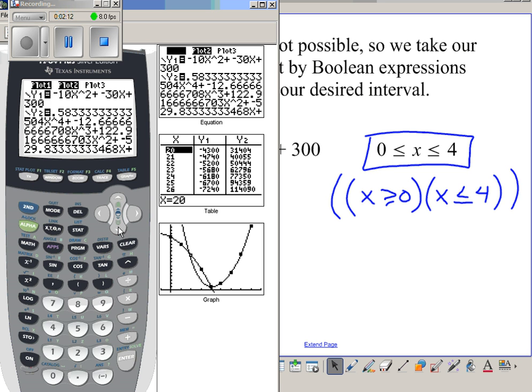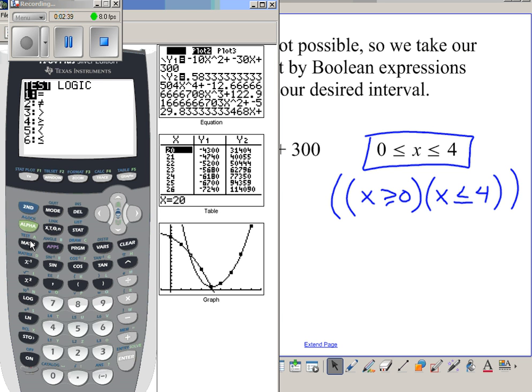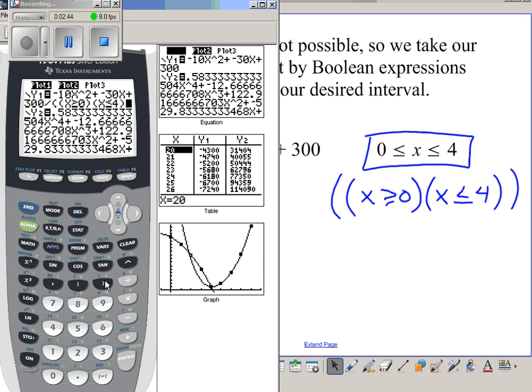So when I go to my y equals, if I go to the back and I hit divide, this first parenthesis will group both of these Boolean expressions. Now I'm going to take my x and hit the test. I want greater than, which is four. So I want x greater than zero, and I also want to divide by x less than...